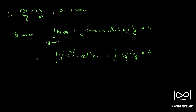We need to integrate this. Considering y as a constant, the integral of y squared e raised to x y squared becomes y squared e raised to x y squared divided by y squared, so the y squared terms cancel. Plus the integral of 4x cubed is x raised to 4. Now integrating minus 3y squared with respect to y gives minus 3y cubed by 3, which is minus y cubed, equal to c.